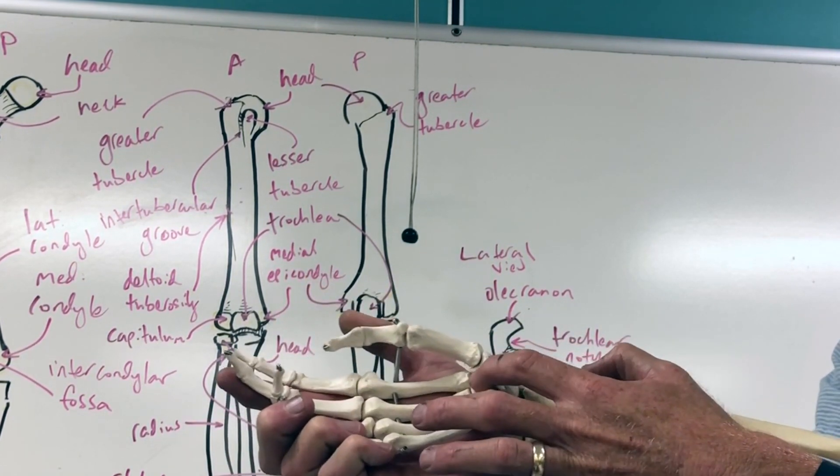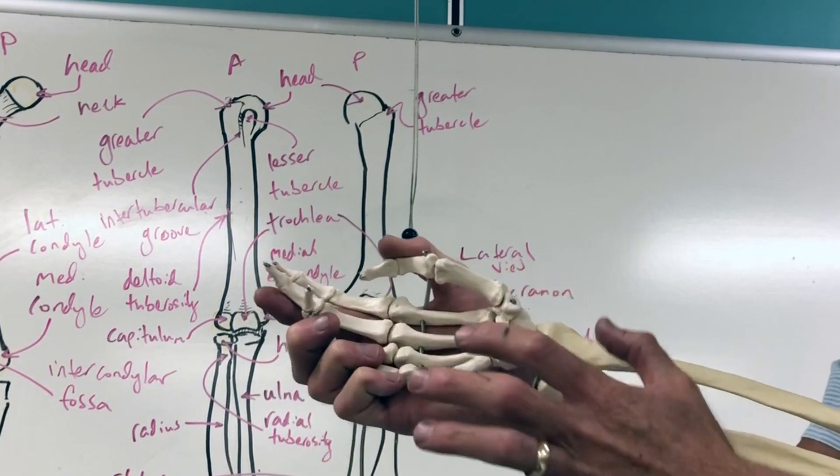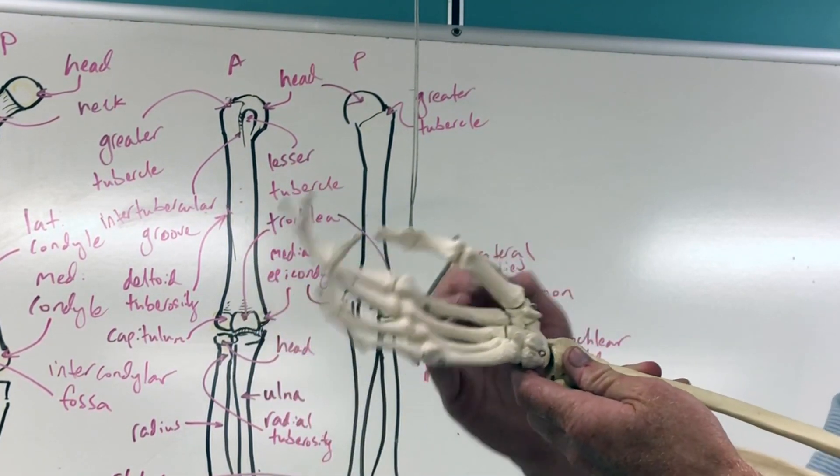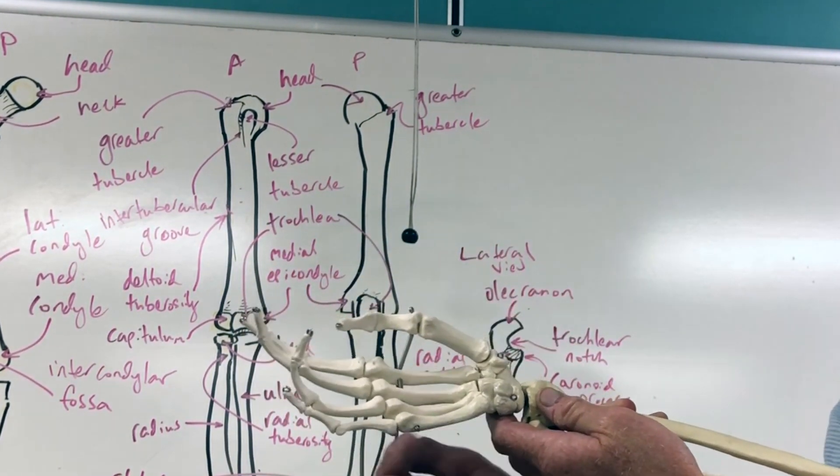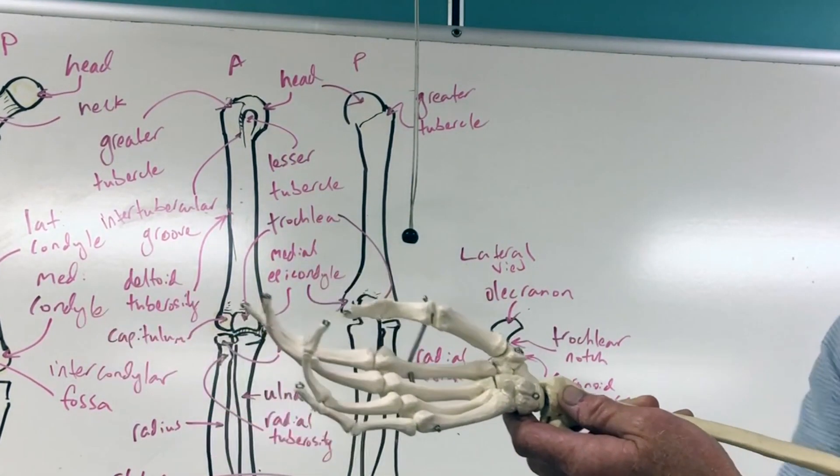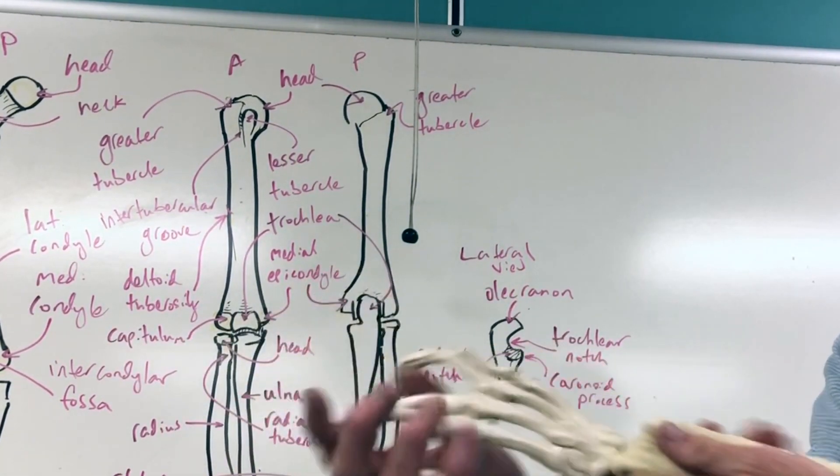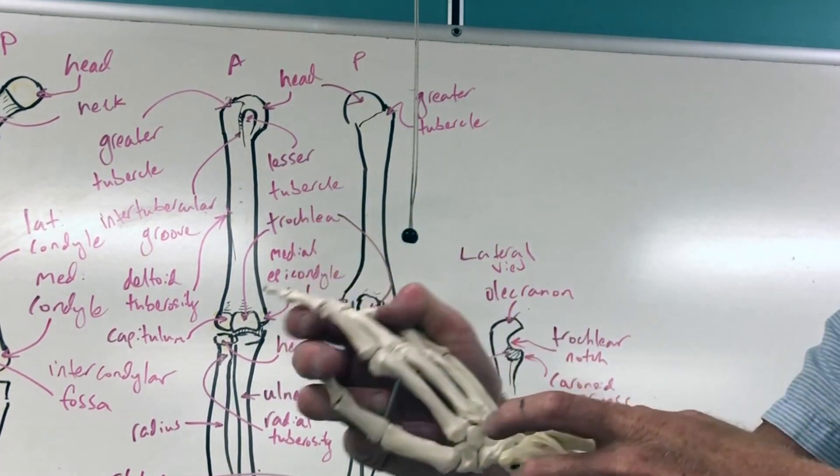Those are going to connect to the metacarpals one, two, three, four, five, and then the phalanges. If we flip them over you got the same sequence of bones, just a different view.